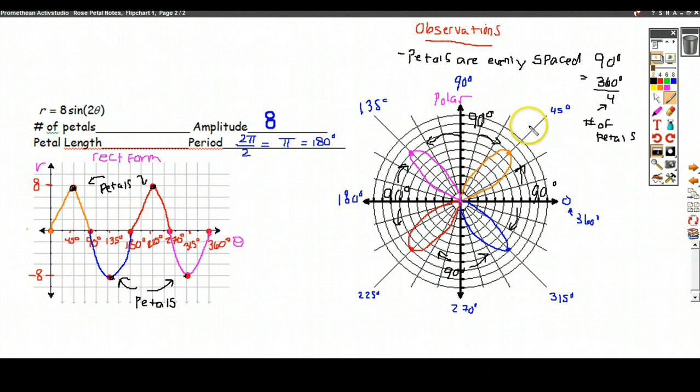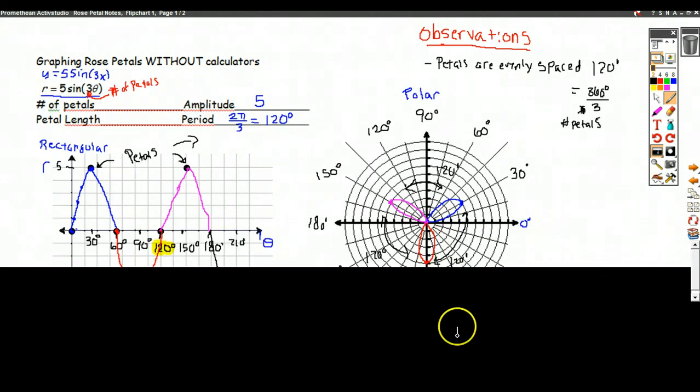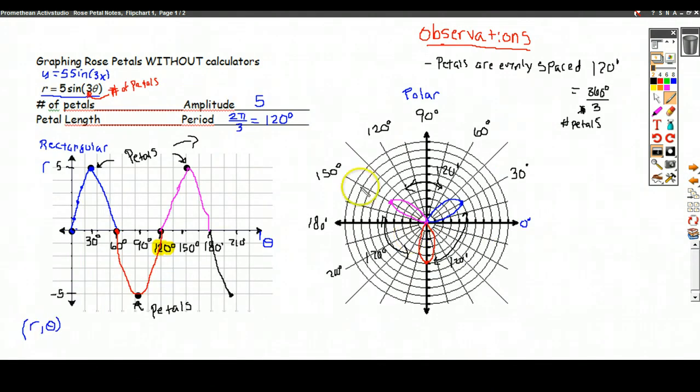And so here's where we should notice the distinction between this one and this one. Here, how many petals were there? There were 3. There are 3 petals. I should have recorded that. And the petal length was 5. They're each a length of 5, which actually corresponds to the amplitude here. So that'll always be the case.